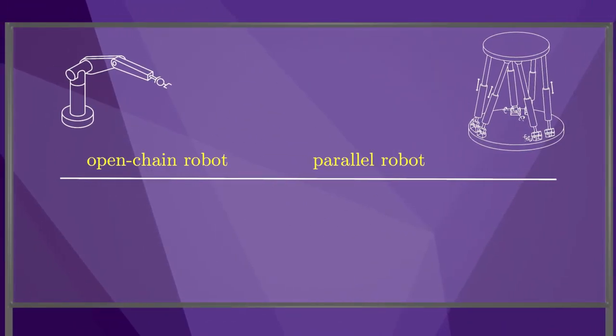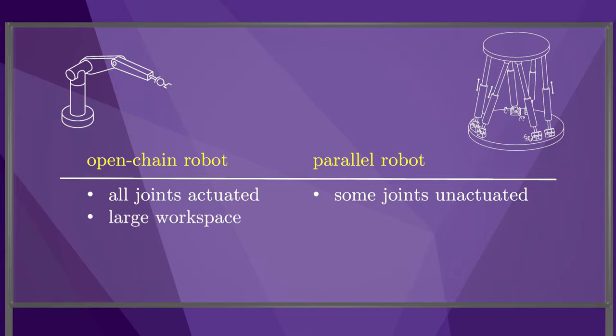Let's summarize some typical characteristics of open chain and parallel robots. For an open chain robot, typically each joint has a motor driving it. For parallel robots, many of the joints are unactuated. Open chain robots tend to have a large workspace, since each extra joint adds to the possible motion of the end effector. Parallel robots tend to have a small workspace, since each leg in parallel places constraints on the motion of the platform.